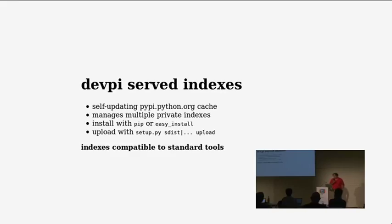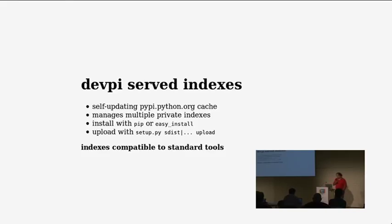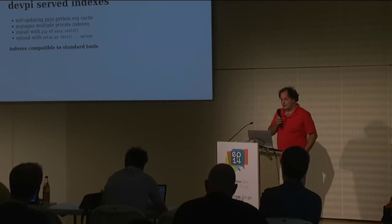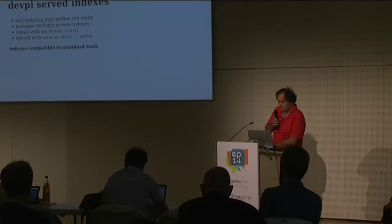Cache invalidation is a very important topic, and this is actually using the official PEP 381 API. It also manages multiple private indexes for you, if you want to implement staging. Each of these indexes supports running against it with pip, easy_install, or buildout. And it supports the typical setup.py upload, upload docs, and so on commands — that's how you can get packages into DevPI.